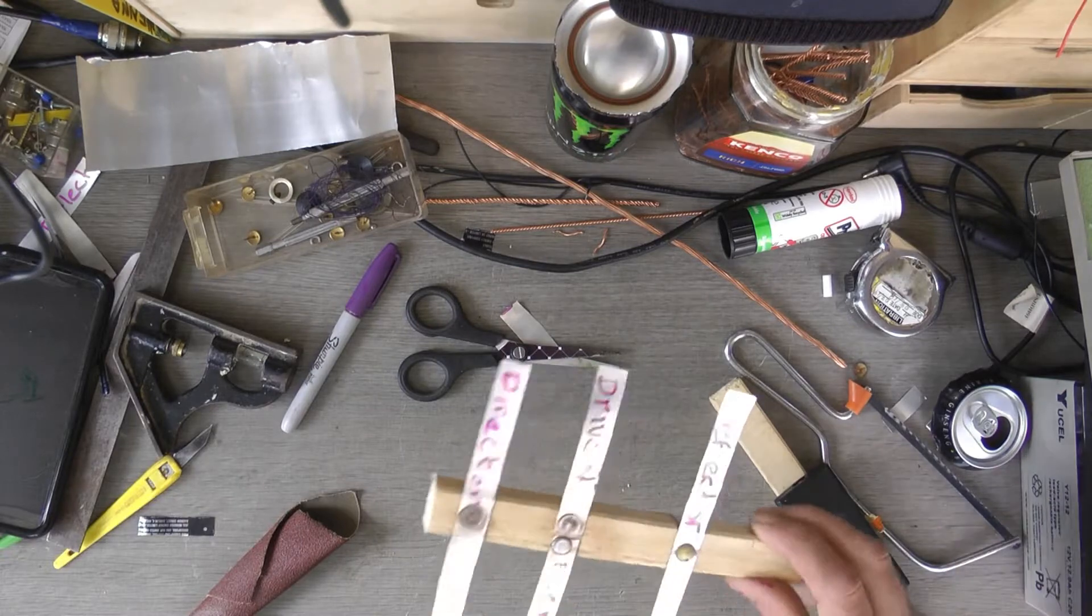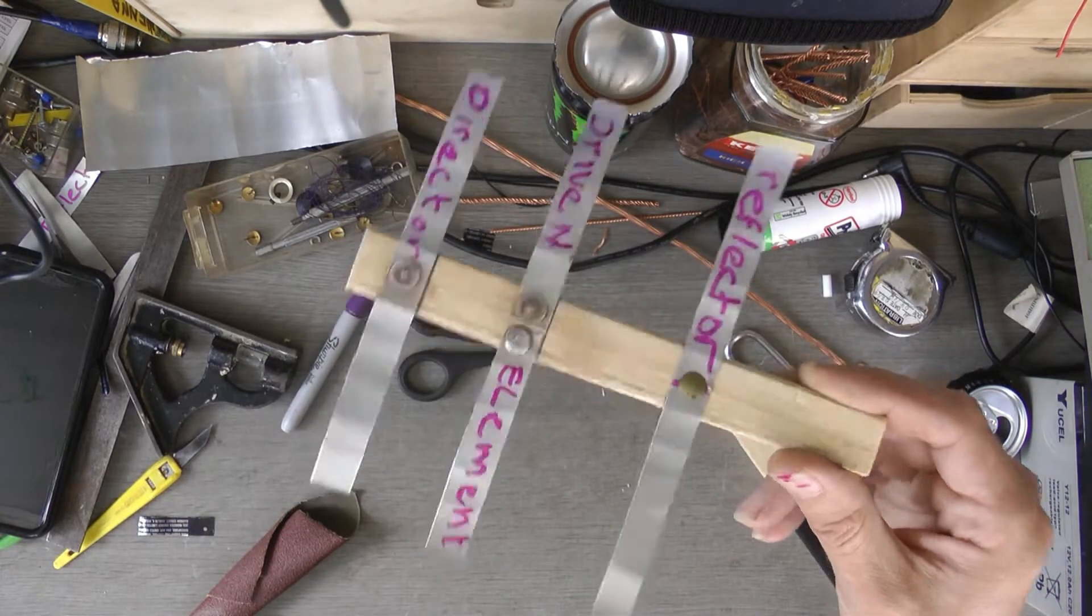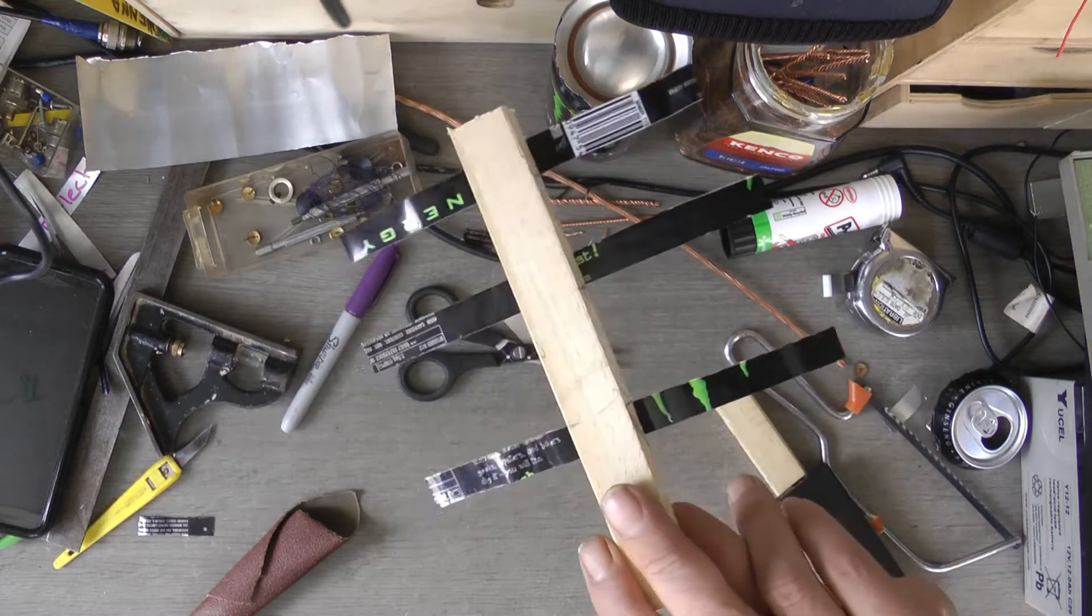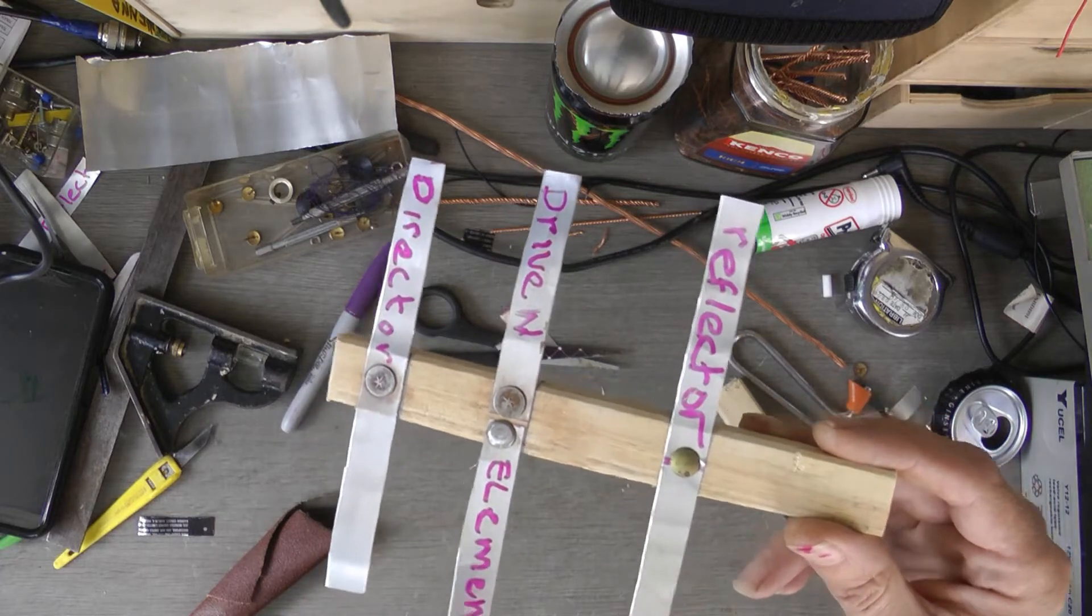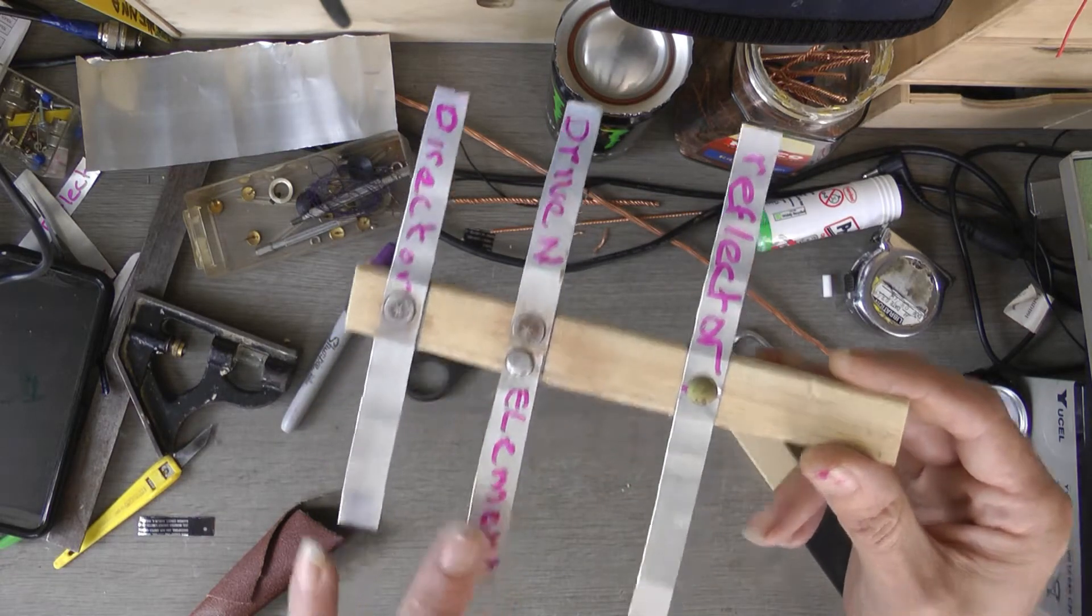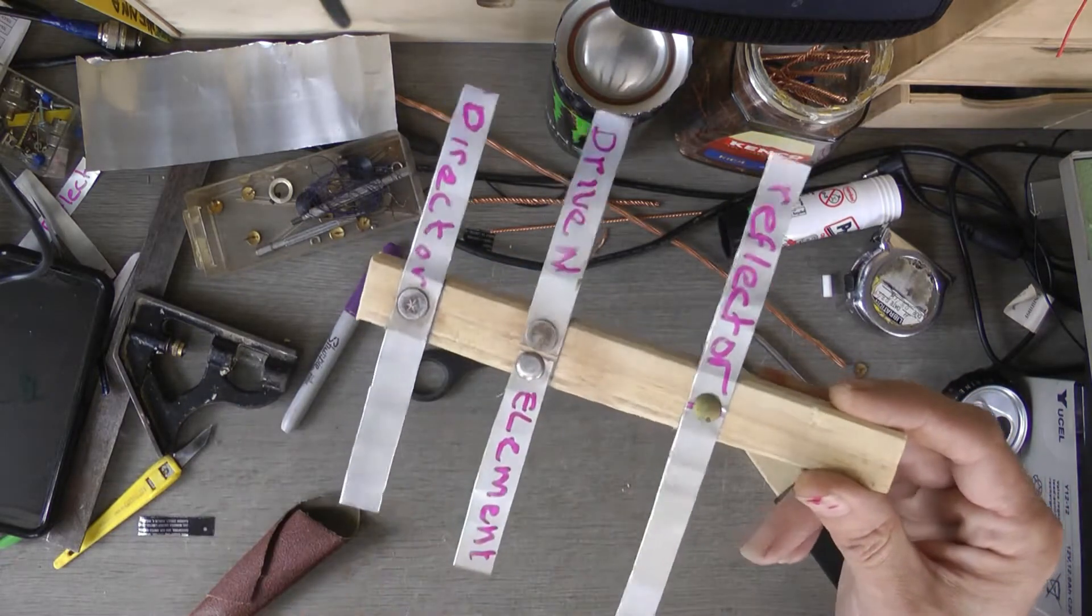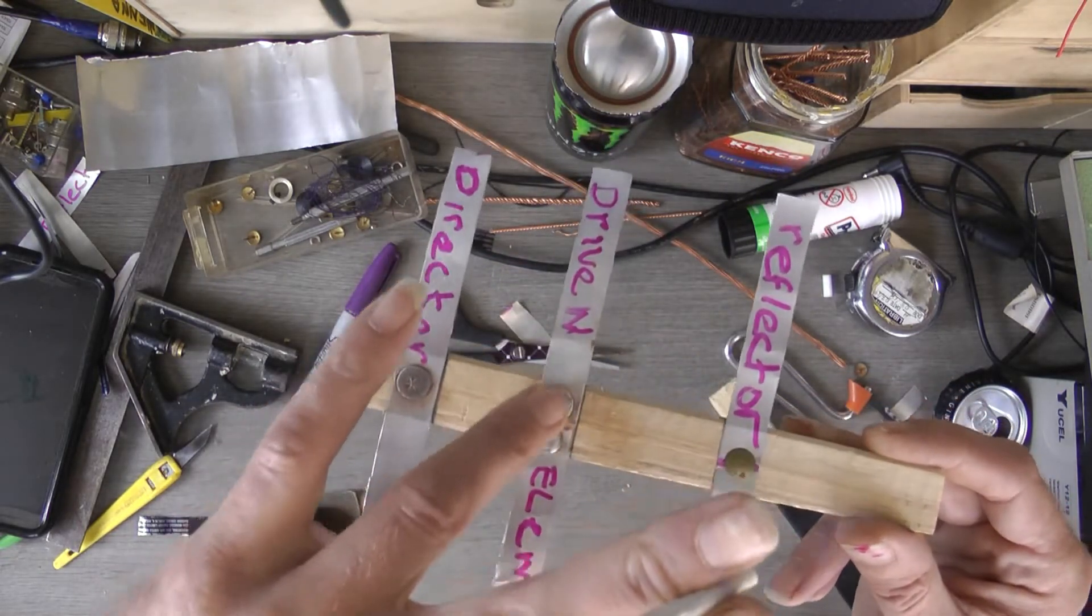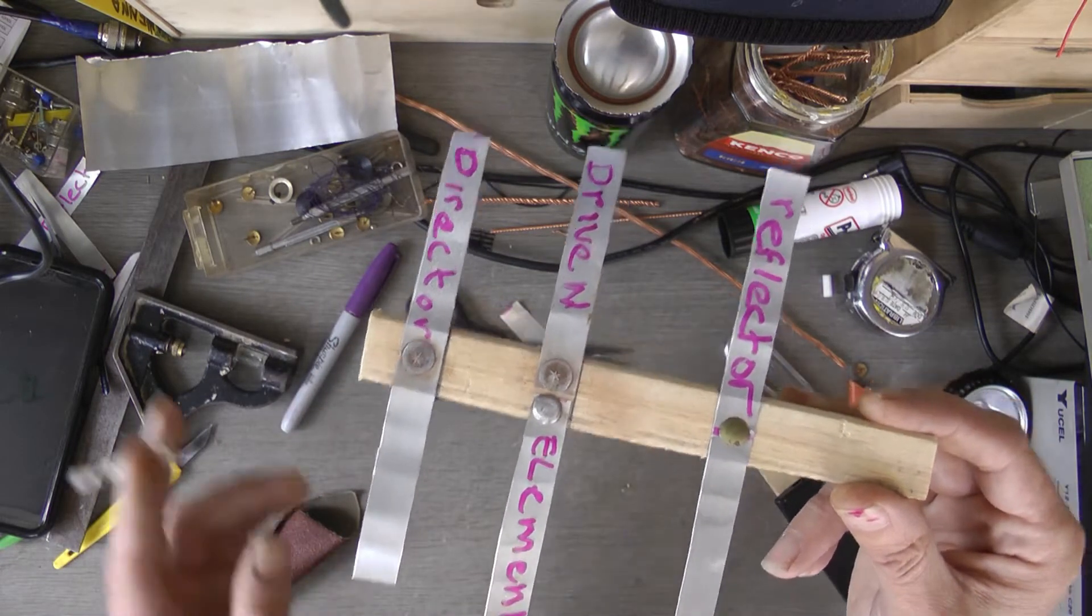Right there it is. Reflector, driven element, director. I'll do them with drawing pins. There's your feed line which is there, which I'm about to do now.